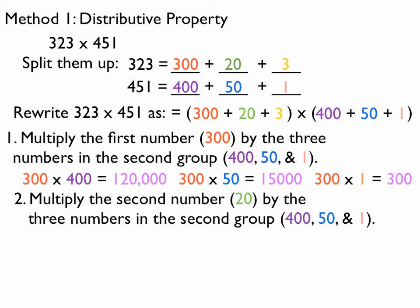Multiply the second number, 20 in this case, by the three numbers in the second group. So, it's going to be 400, 50, and 1. So, 20 times 400 is 8,000. 20 times 50 is 1,000. And 20 times 1 is equal to 20.